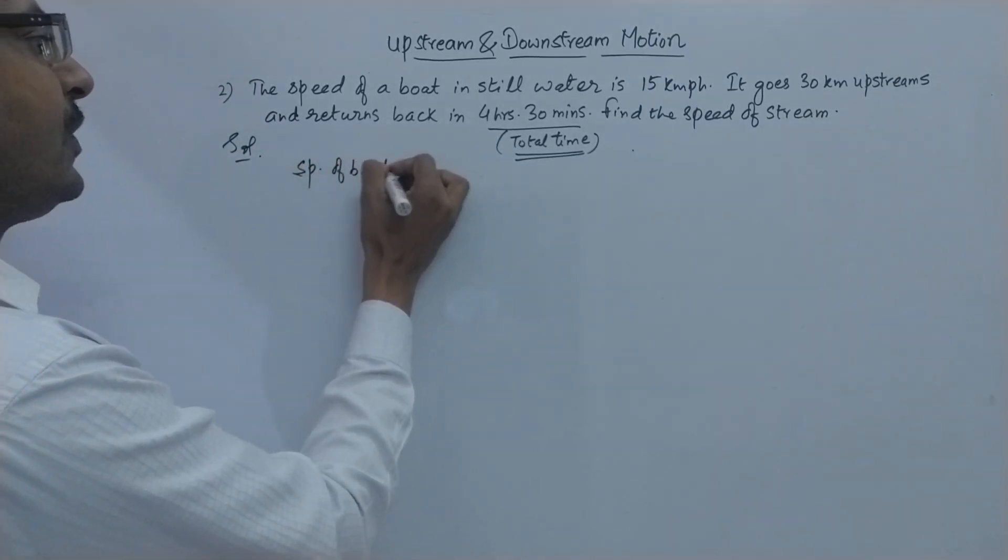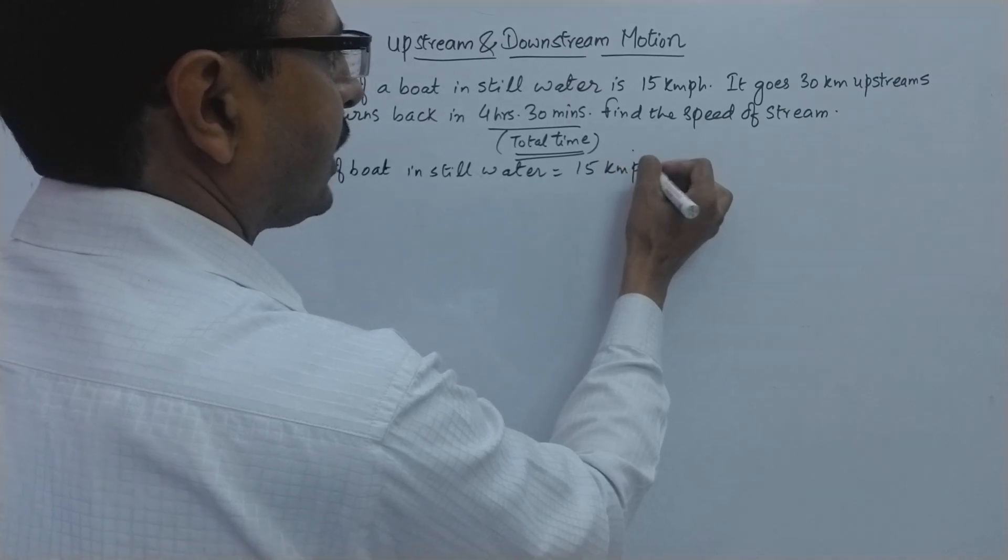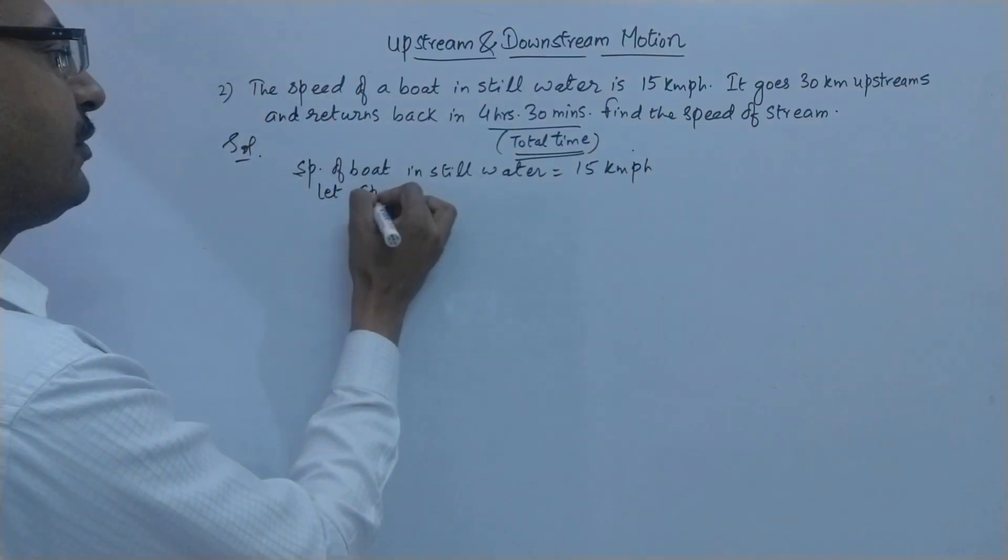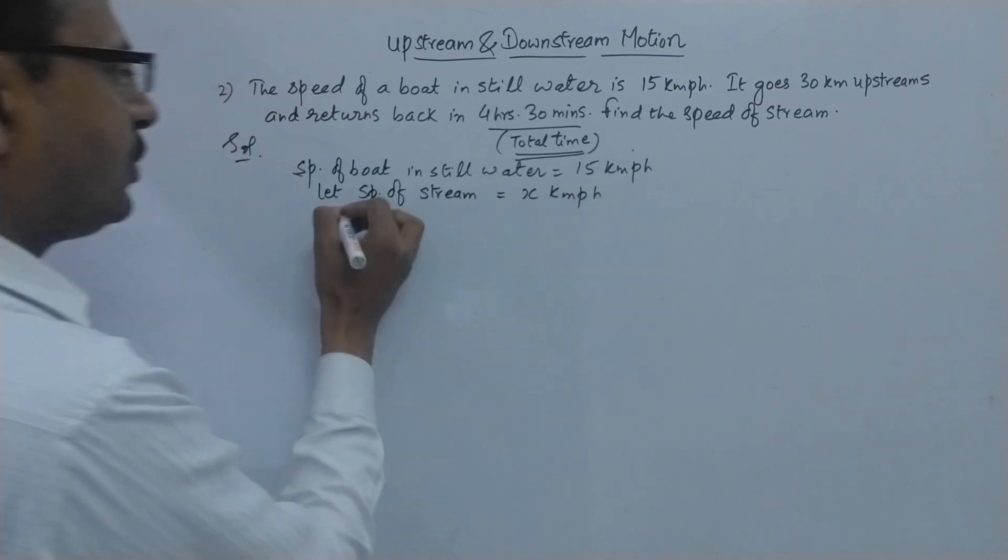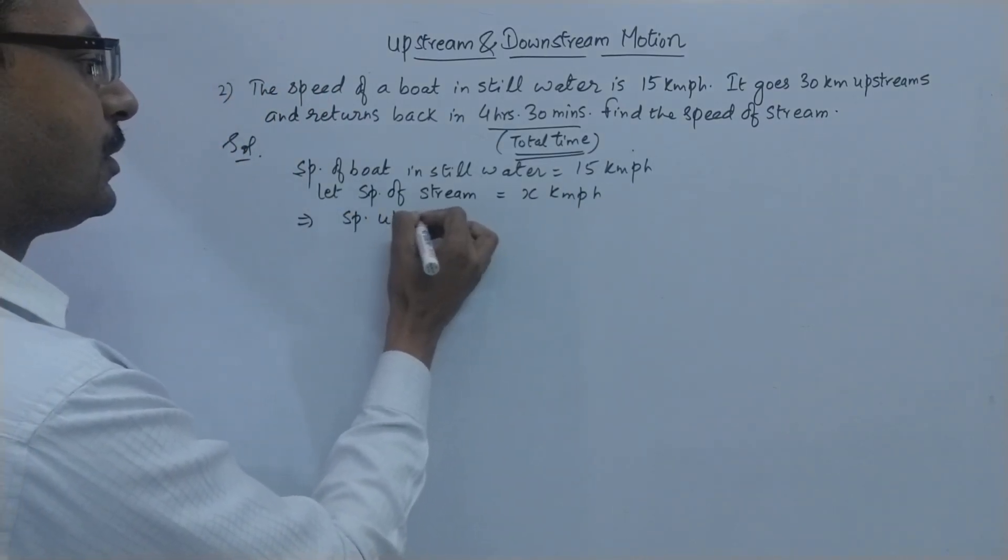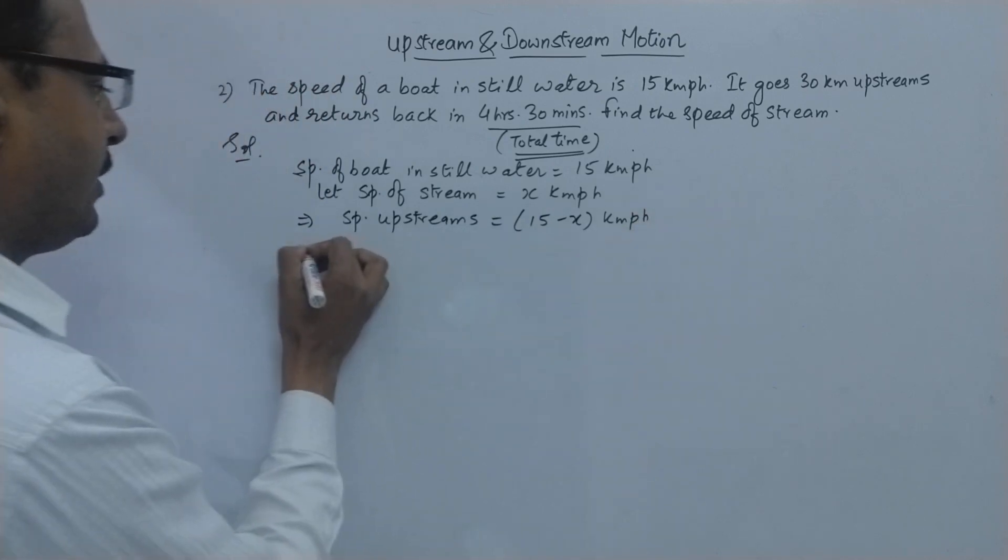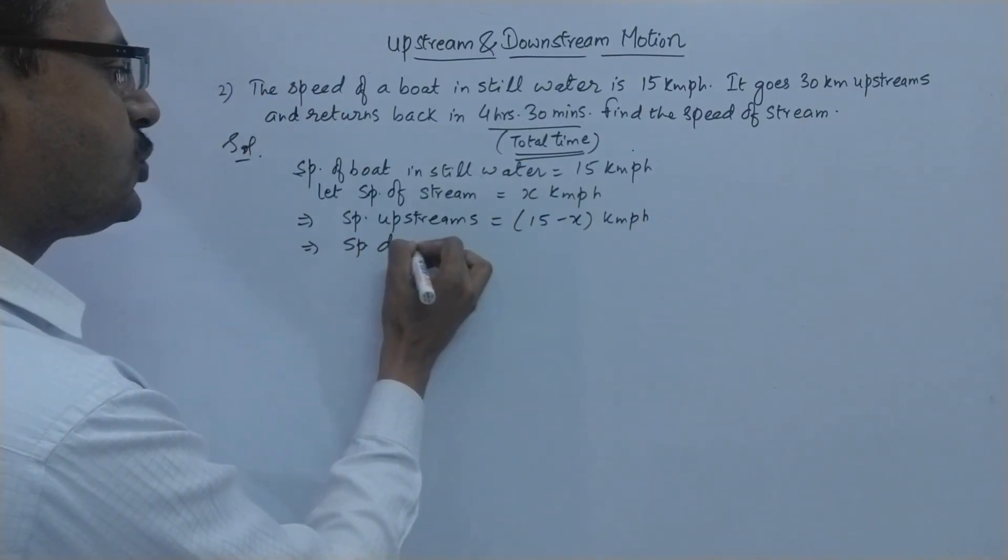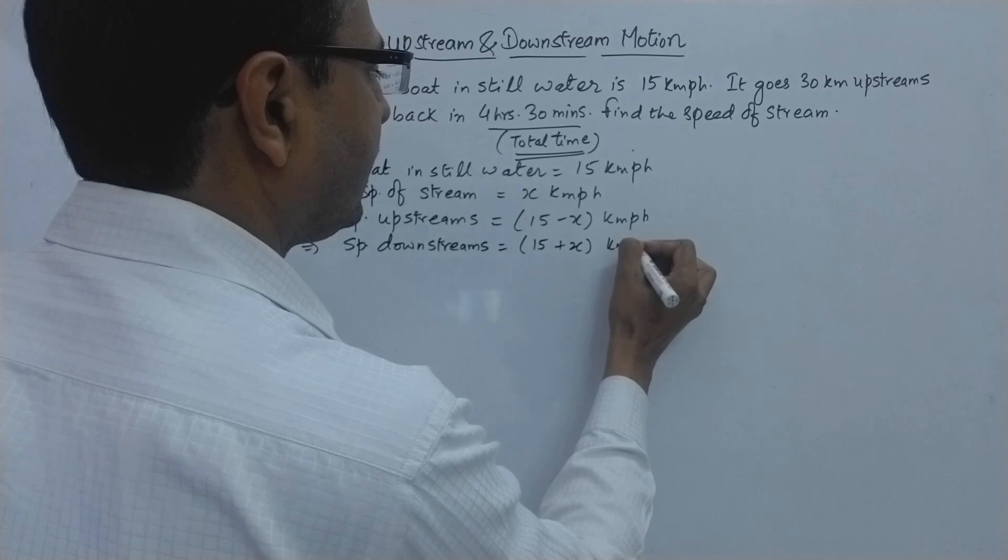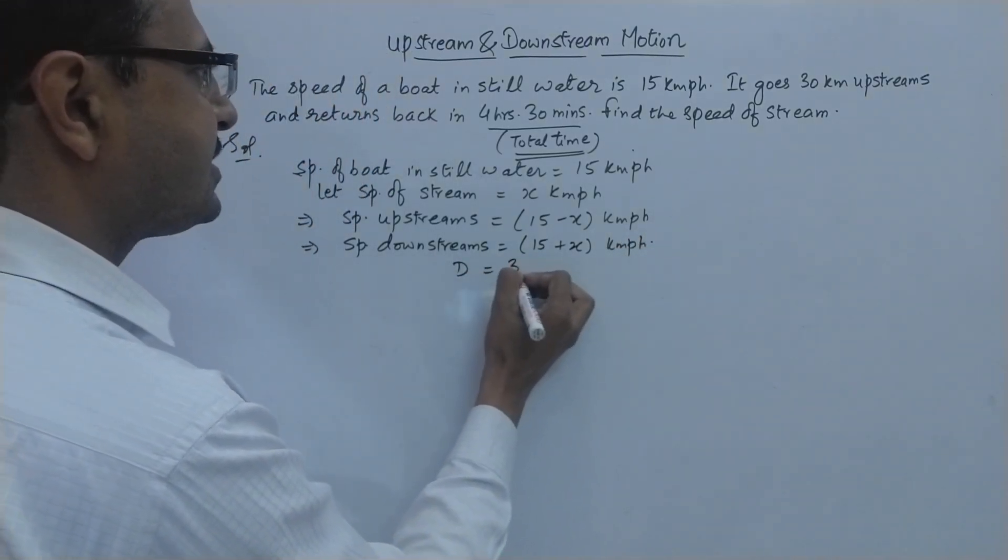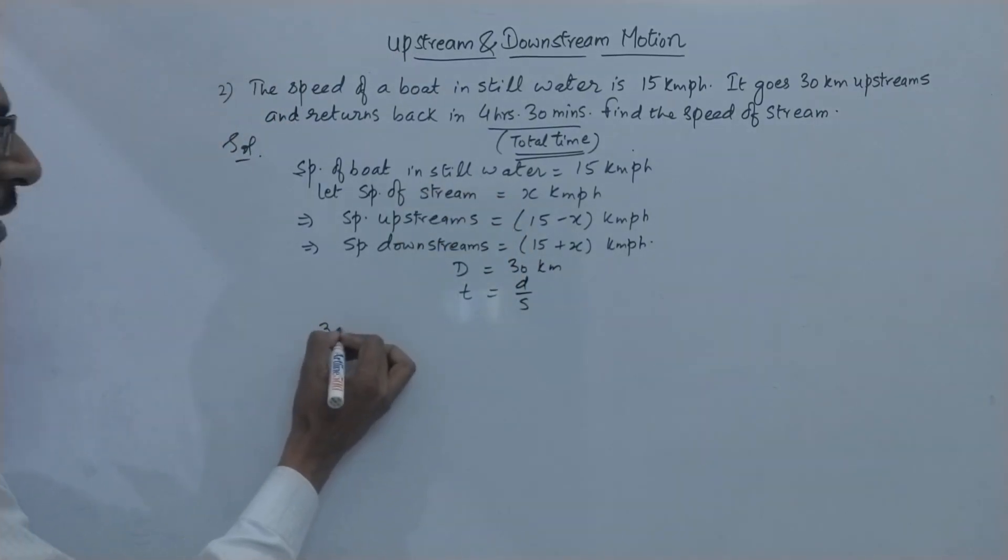So what is given? Speed of boat in still water, this is given as 15 kmph and you have to assume speed of stream as x kmph and this will give you speed upstream as 15 minus x. I am doing it quickly because I have already explained the concept to you in the previous question.